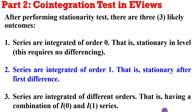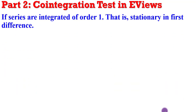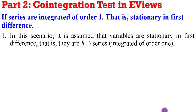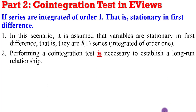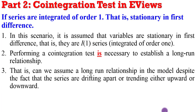In this tutorial, we are only going to focus on the second scenario: if the series are integrated of order one, that is, stationary after first difference. If you have this situation, where all variables are stationary in first difference, co-integration testing is necessary to establish a long-run relationship between or among the variables. We assume that a long-run relationship exists in the model, despite the fact that the series are either drifting apart or trending upwards or downwards.